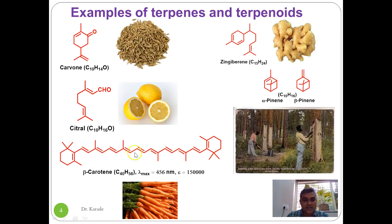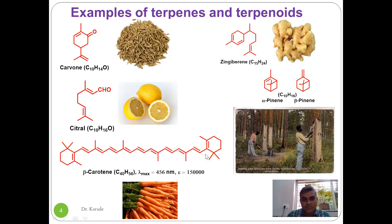The last molecule is very interesting — it is called beta-carotene. Beta-carotene contains a total of 11 conjugated double bonds, and because of this conjugated chromophore it has a very high lambda-max value of 456 nanometers. The red color of the carrot is due to the presence of beta-carotene.